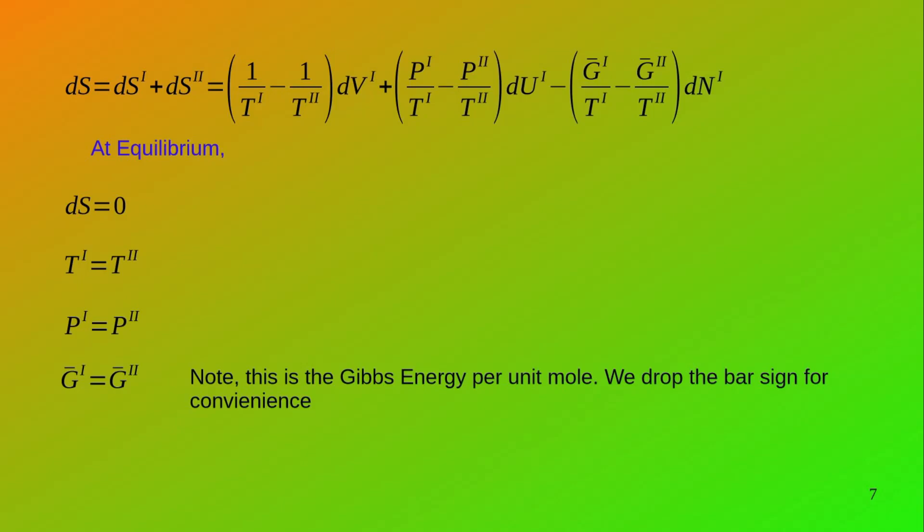Adding the two entropy equations, we get the total change in entropy of the system as: (1/T₁ − 1/T₂)dU₁ + (P₁/T₁ − P₂/T₂)dV₁ − (G̅₁/T₁ − G̅₂/T₂)dn₁. Note the minus sign here — and remember why it appears exactly.